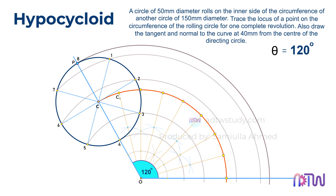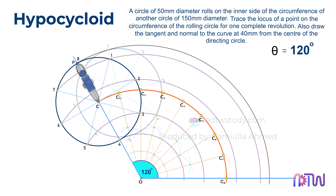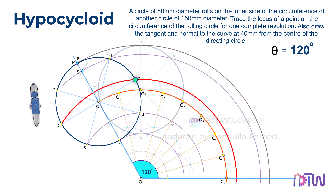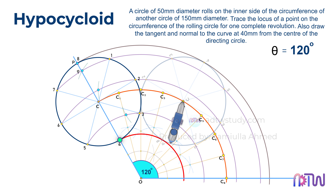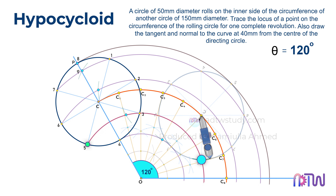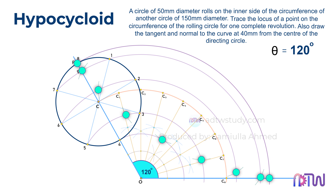Next, label these points as C1, C2, C3, and so on, up to C8. Therefore, we now have the required construction lines for tracing the locus of point P. We can observe that when the rolling circle rolls to point C1, point P moves along this line. To mark this, take a compass, adjust it to the radius of the smaller circle, and using point C1 as the center, cut an arc on this line. Similarly, when the circle rolls to point C2, point P moves along this line. Using point C2 as the center, cut an arc on this line as shown. Repeat this process for the other points. In the end, join all these points with a smooth curve.